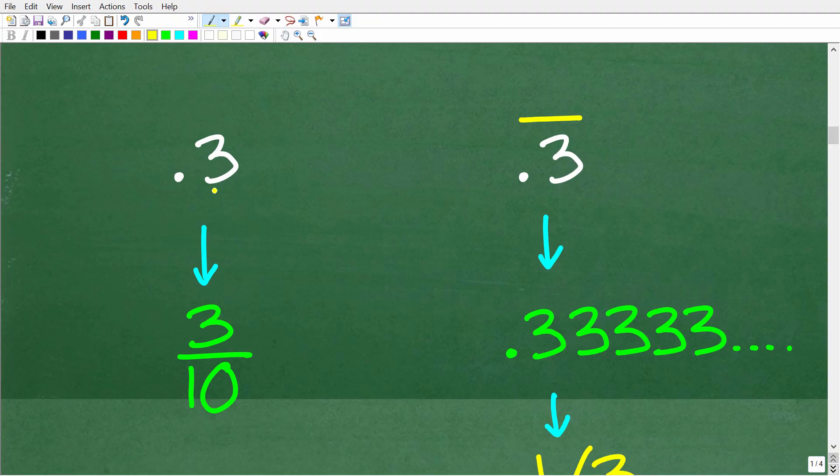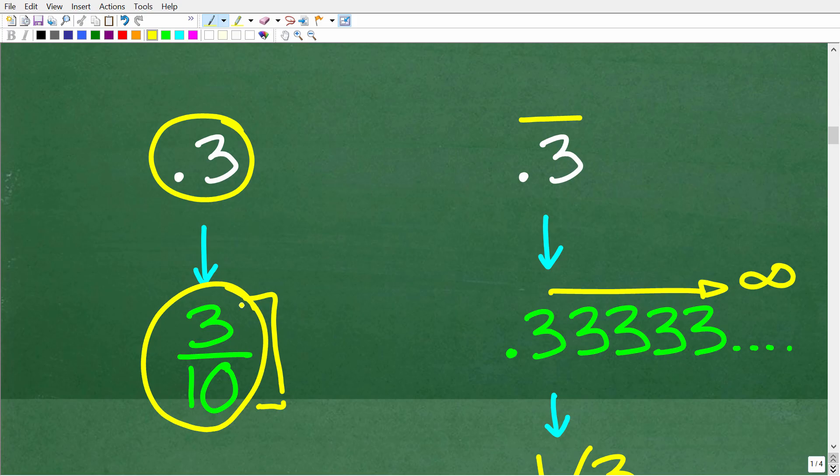So 0.3 is the fraction or the decimal 3 tenths. So you can express the fraction 0.3 as 3 over 10. But 0.3 repeating means take this 0.3 and just keep adding threes. The threes here are repeating infinitely. So this is not the same thing as 0.3.